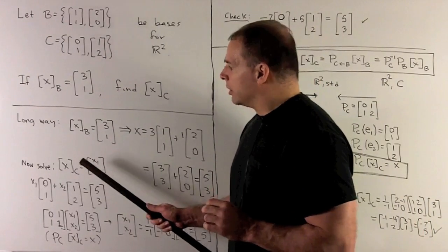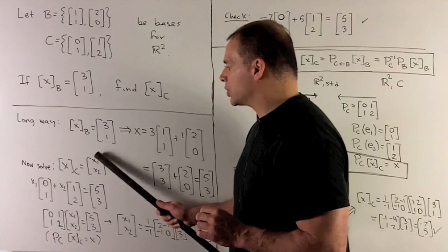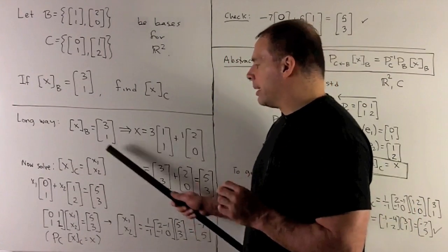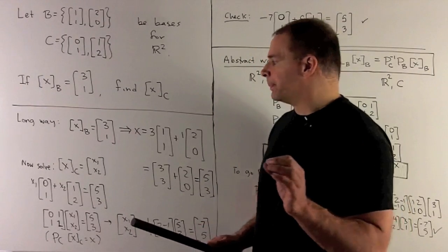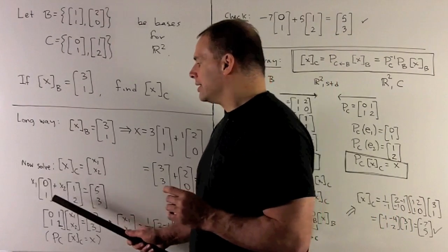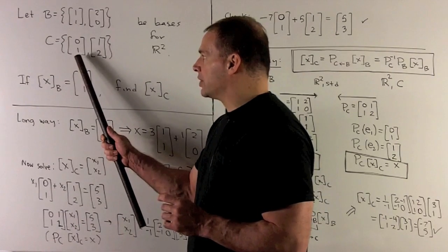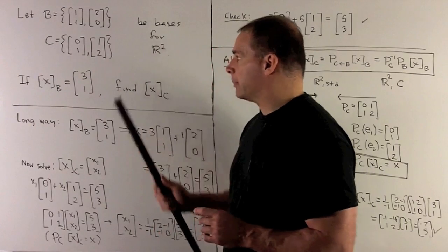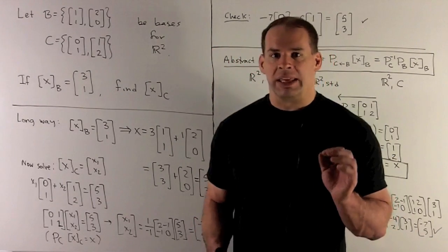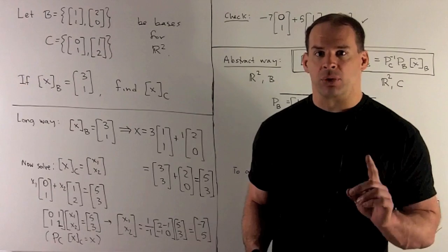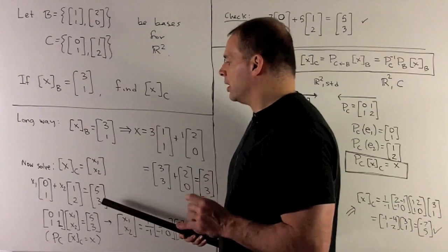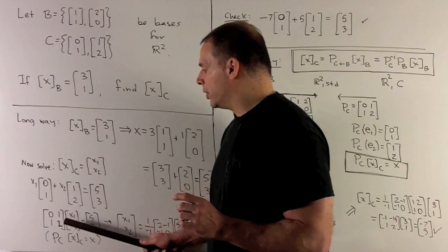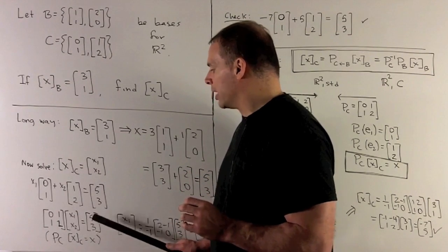So, we're going to have our coordinate vector of X with respect to C will be [X1, X2]. So what does that mean? We're going to build a linear combination out of this, but with respect to C. So we'll have X1 times [0,1], our first basis vector in C, plus X2 times [1,2], our second basis vector in C. And then we want this to be equal to X, so that's going to be [5,3]. Now, to solve this, just note we can put it in matrix form. So we'll have [0,1; 1,2] times the vector [X1, X2] equals [5,3].